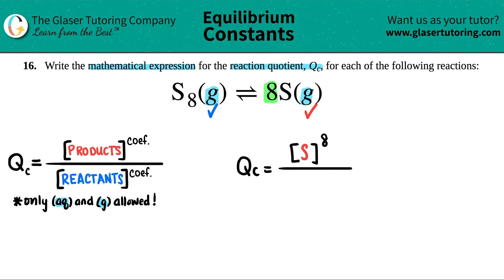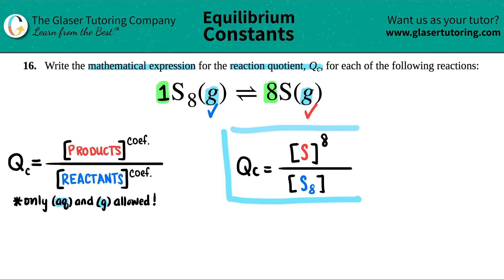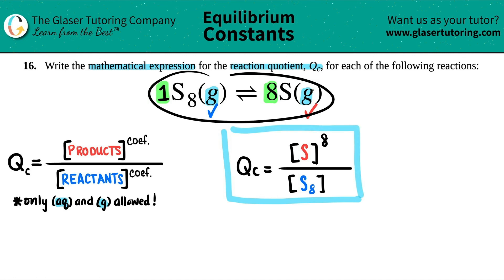That's the only product, so now we go to the reactant. There's only one molecule here, which is S8. I'm going to put a bracket, write S8, and close the bracket. Now what is the big number in the front? There was none, which means it's just one. You can write the one up here, but remember anything raised to the first is the same number. So you're done — this is your QC formula specifically for this balanced equation.